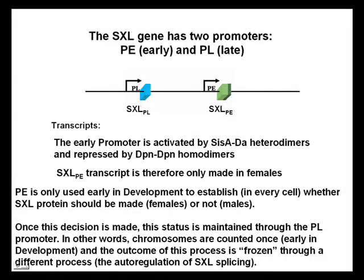The sex lethal gene has two promoters: early and late. The early promoter is activated by SysA-DA heterodimers and repressed by deadpan-deadpan homodimers. The sex lethal early transcript is therefore only made in females. The early promoter is active only early in development to establish whether the sex lethal protein should be made. Once this decision is made, the status is maintained through the late promoter. Chromosomes are counted once early in development and the outcome is frozen through auto-regulation of sex lethal splicing.